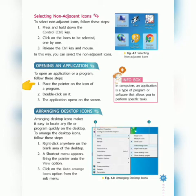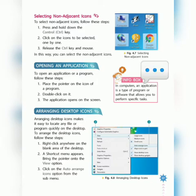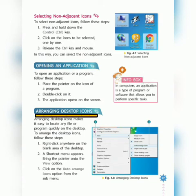The next topic is opening an application. To open an application or program, follow these steps: place the pointer on the icon of the program and double-click on it — the application opens on the screen. Note: in computers, an application is a type of program or software that allows you to perform a specific task.